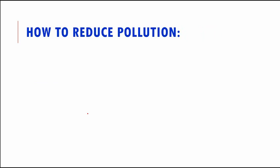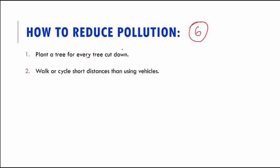Now let's see six important ways to reduce pollution. First, plant a tree for every tree you cut down — this ensures we are not clearing out forests completely. Second, walk or cycle short distances rather than using your own vehicle — this saves natural resources, prevents pollution, and exercise is good for our bodies. Third, do not waste electricity. Saving electricity saves fuel — switch off lights and fans in rooms you're not using.